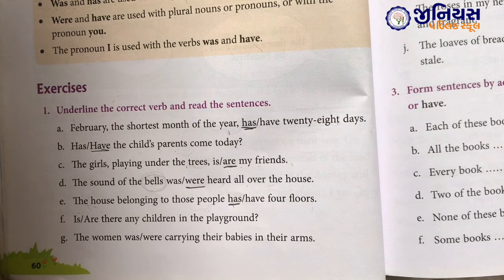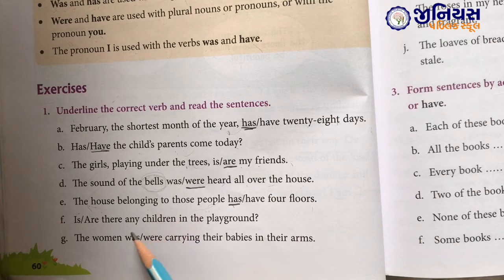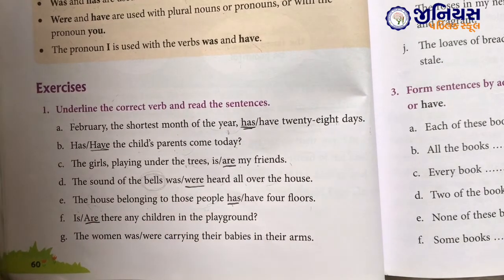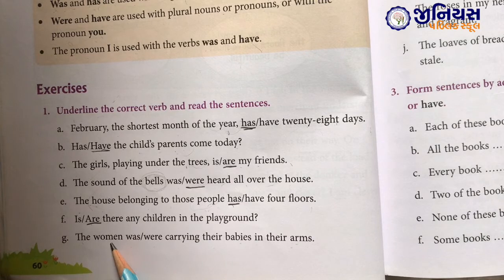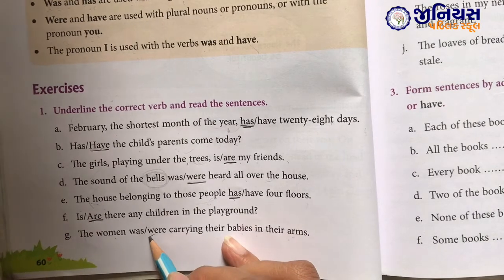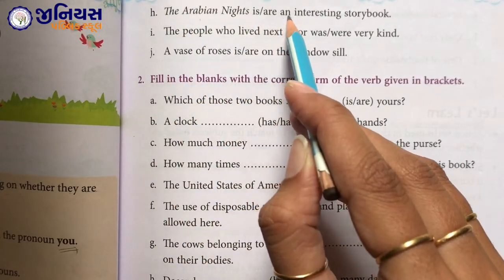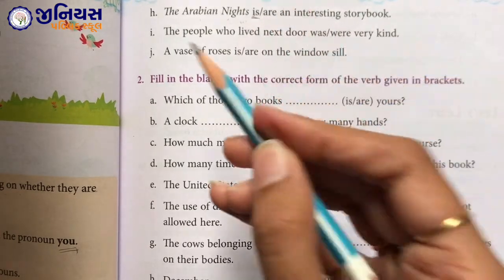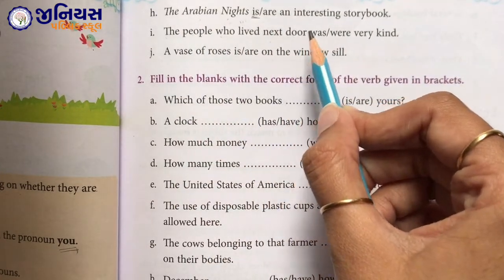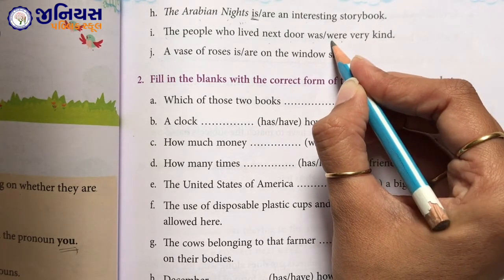'Is or are there any children in the playground?' Children is a plural word, so we use 'are'. Next: 'The women was or were carrying their babies in their arms.' Women is a plural word, so we are going to use 'were'.